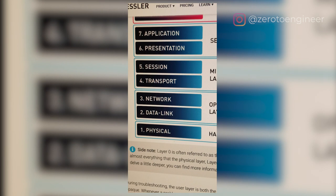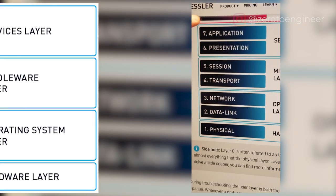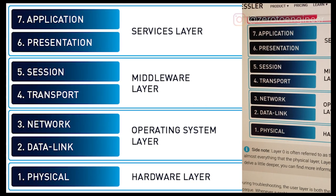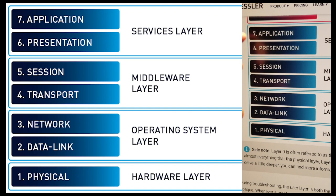Being an application security engineer is different than being a network security engineer. Application security engineers operate at layer seven — the application layer. Network security engineers mainly focus on layer three, layer four, or maybe even beyond that. We work closely at the application layer with our software developers and software engineers.